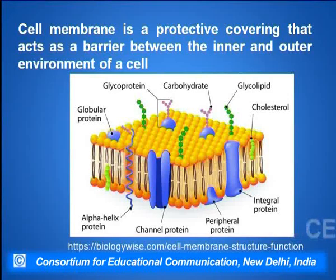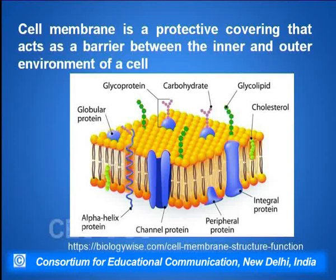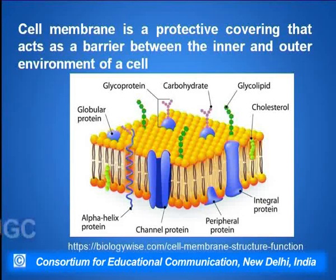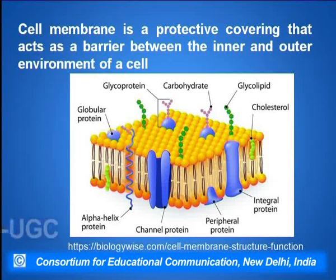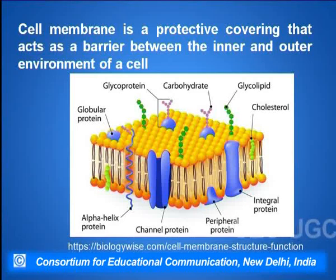The cell membrane is a protective covering that acts as a barrier between the inner and the outer environment of a cell. The cell membrane is a lipid bilayer — there are two layers present with a head and tail on each side. In between them there are various proteins such as the integral proteins which are present across the bilayer, and peripheral proteins on the inner or outer surface.